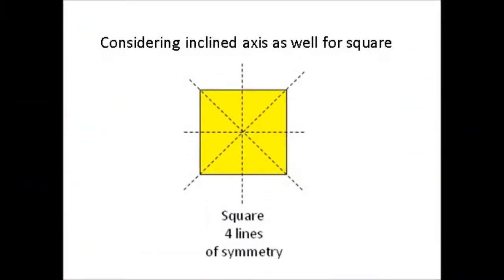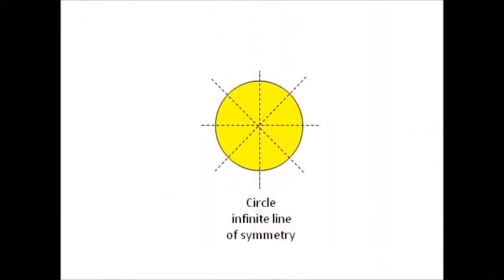Considering the inclined axes for a square, we may have four lines of symmetry, as well as eight lines of symmetry including the inclined axes in total. A circle may have infinite possibilities of making mirror images when a line passes through its centroid, so there are infinite lines of symmetry for a circle.